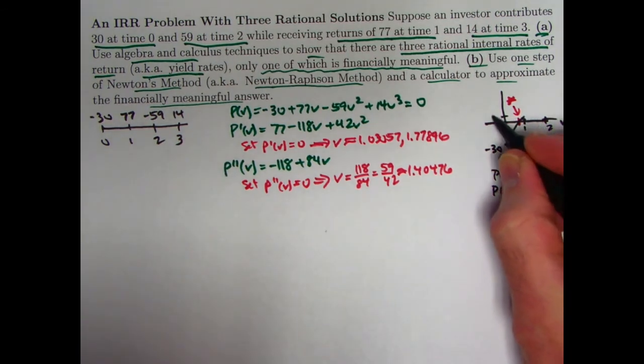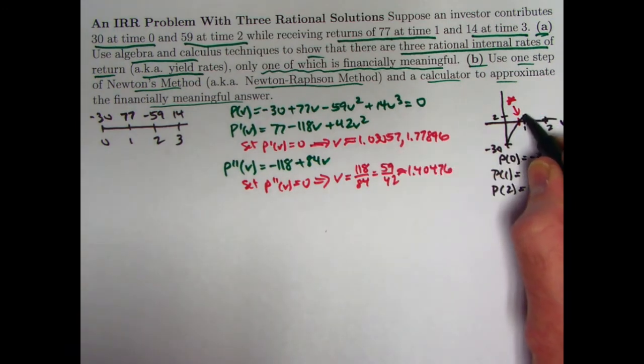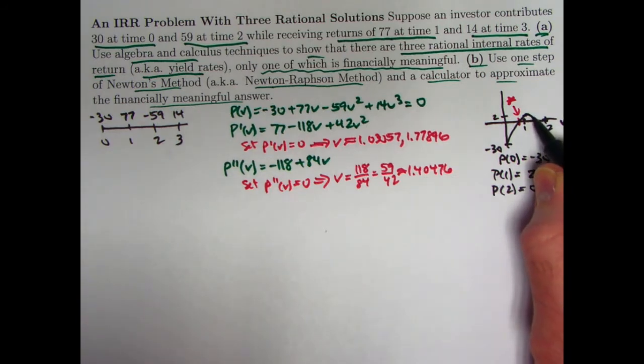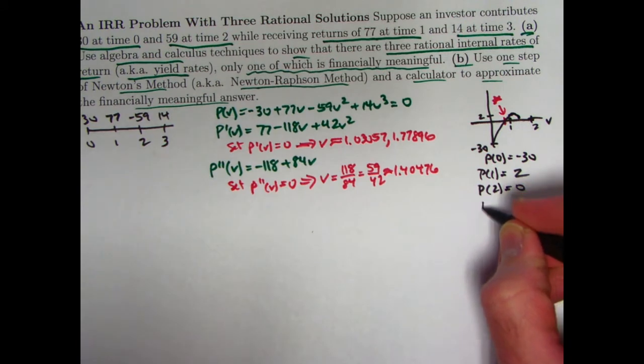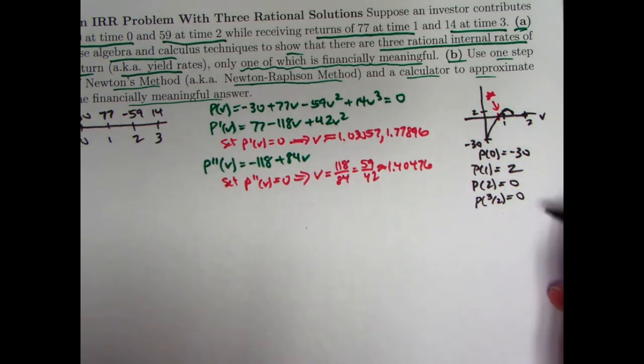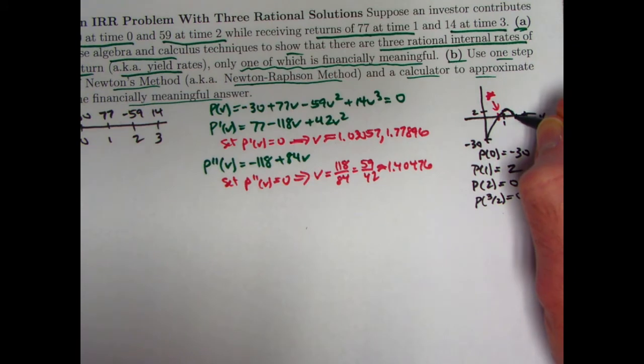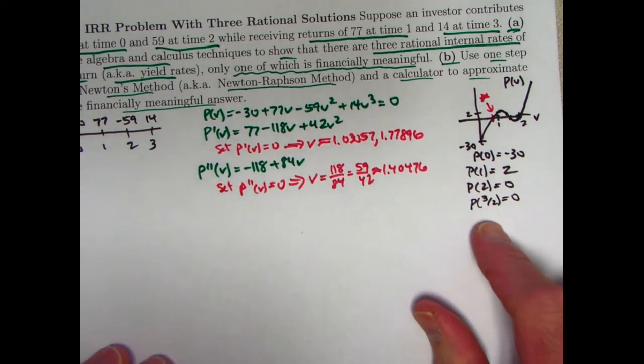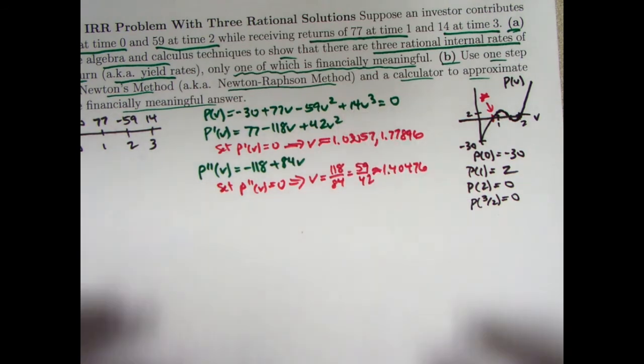One of the roots, which must be the financially meaningful one, is going to be just less than one. v just less than one is the typical financially meaningful situation, technically even down close to zero, but usually it's close to one but less than one. Especially since we aren't losing money in this transaction. We are contributing 89 total and receiving 91 total. So it should be a positive rate of return if it's going to be financially meaningful. That's the one we're after for v, less than one corresponding to a positive i. v of one is 2, so this gets up to 2. There's a maximum when v is slightly bigger than one, goes slightly higher than 2.